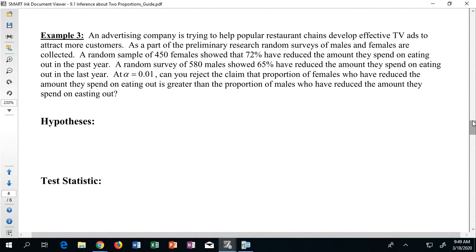Here's what it says: An advertising company is trying to help popular restaurant chains develop effective TV ads to attract more customers. As part of the preliminary research, random surveys of males and females are collected. A random sample of 450 females showed that 72% have reduced the amount they spend on eating out in the past year. A random sample of 580 males showed that 65% of them have reduced the amount they spend on eating out in the last year.